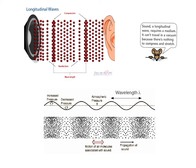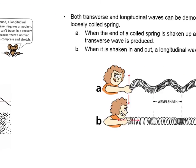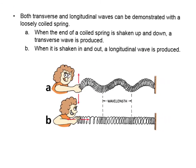In a longitudinal wave, the wavelength is the distance from compression to compression, or rarefaction to rarefaction. In this picture, we see that compressions correspond to crests in a sine wave, and rarefactions correspond to troughs. Both transverse and longitudinal waves can be demonstrated with a loosely coiled spring: shaking the end up and down produces a transverse wave, while shaking it in and out produces a longitudinal wave.